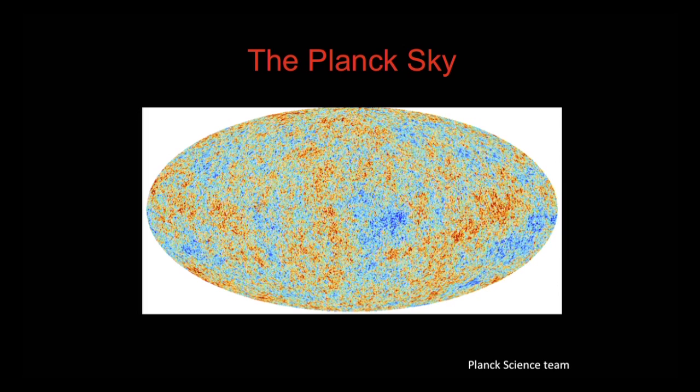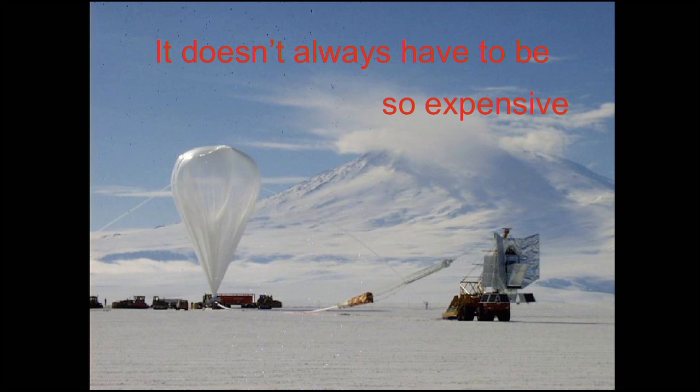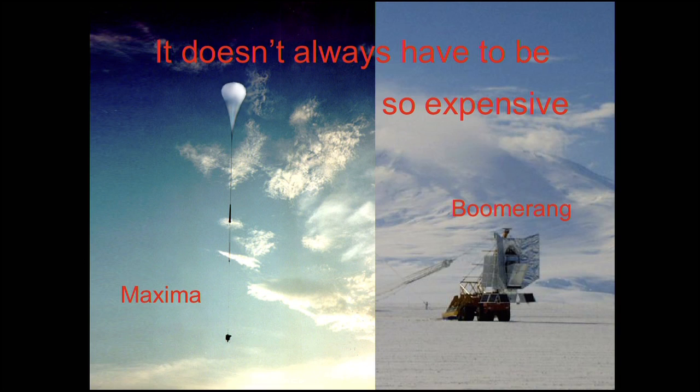We don't always make measurements from space — sometimes we make them from the ground or near the ground, which has advantages: it's less expensive and doesn't take as long. John, who will talk next week, was part of an experiment called Boomerang, which operated down in Antarctica. You prepare a microwave telescope, attach it to a balloon, and send it into the upper atmosphere. There was also another experiment called Maxima. Both were early and very successful balloon experiments that made important measurements of the universe from the microwave background.